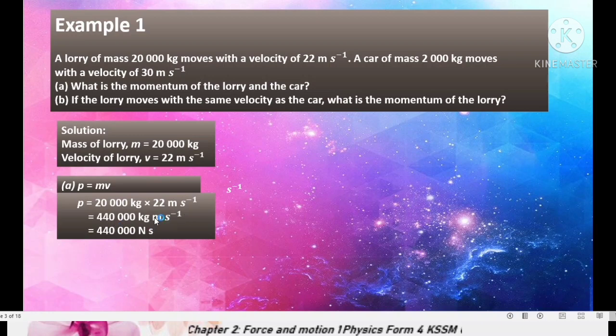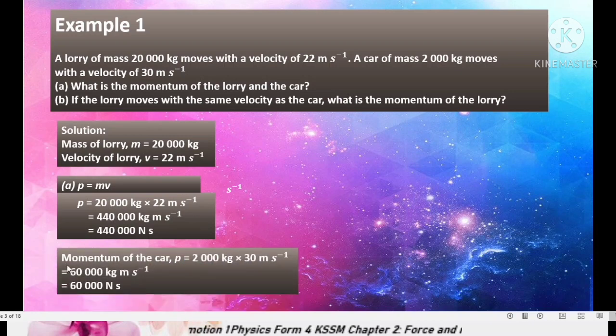And this unit, kilogram meter per second negative 1, actually equals to newton second. Meaning another word that can be used to state a unit for momentum. So we get the value of momentum of the lorry. For the car, we use momentum equals to mass, 2,000 times 30 m per second negative 1. So we get 60,000 kg meter second negative 1 or 60,000 newton second.